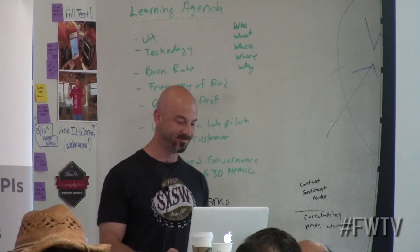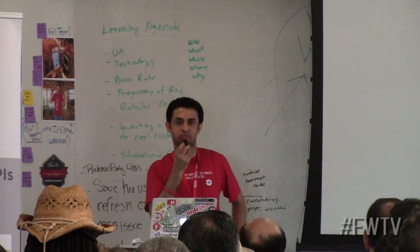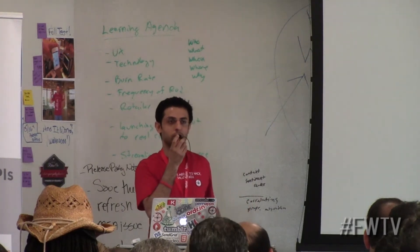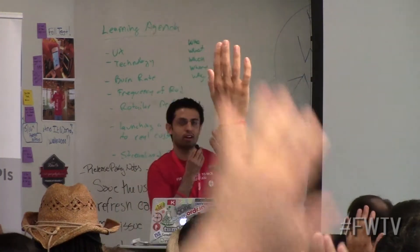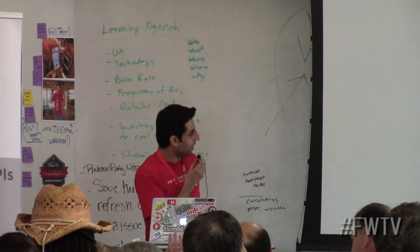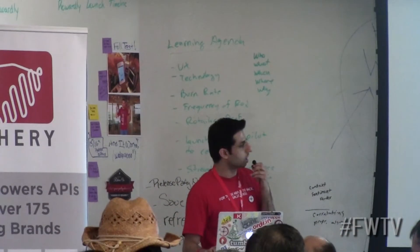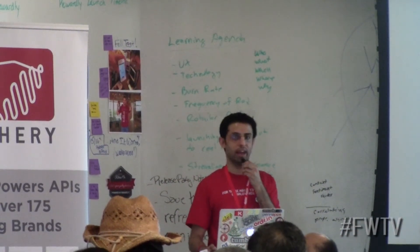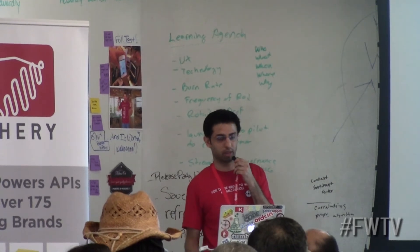It's worked out pretty well. My name is Amit. I am a developer evangelist for a company called Mashery. Mashery manages APIs for companies like New York Times, USA Today, Cloud, Best Buy — user-facing APIs.